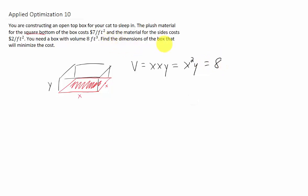We need to find the dimensions of the box that will minimize our cost. So we need to come up with a function for our cost, call it C. Let's start with the cost of the bottom of the box. The area of the bottom is X times X or X² and the cost per area is $7 per square foot. So the cost of the bottom of our box is 7X².